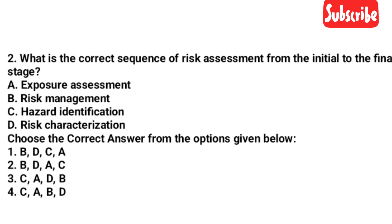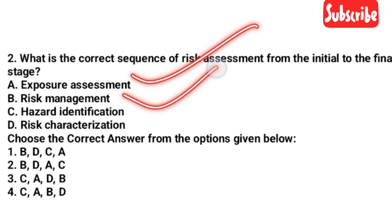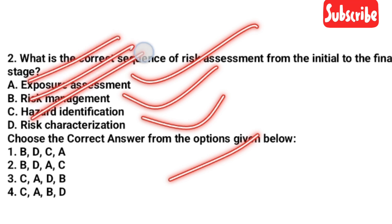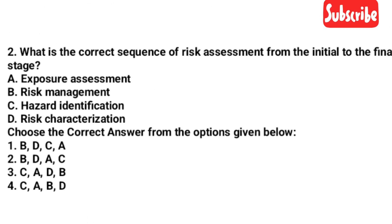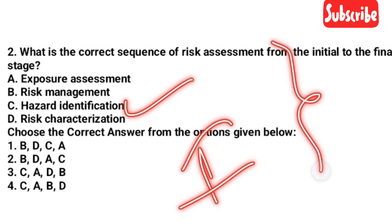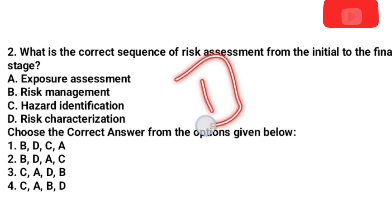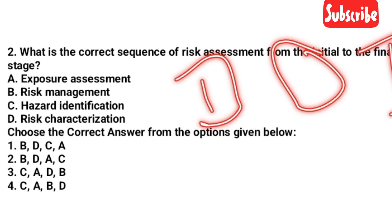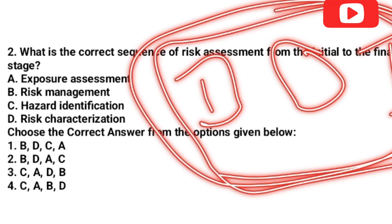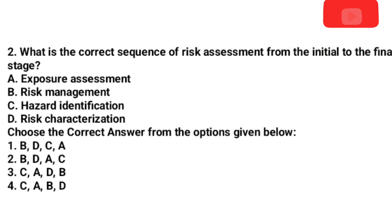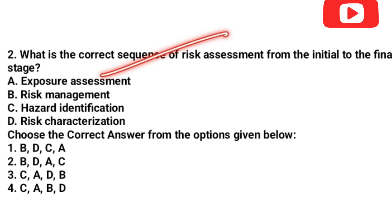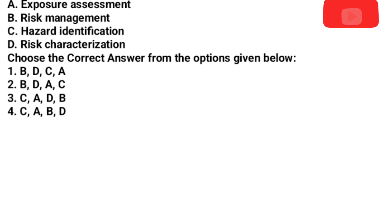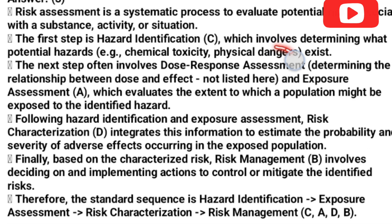Next question: What is the correct sequence of risk assessment from the initial to final stage? The options are: exposure assessment, risk management, hazard identification, risk characterization. Option number 3 is the answer. The correct sequence is: hazard identification → exposure assessment → risk characterization → risk management.